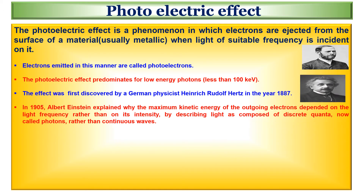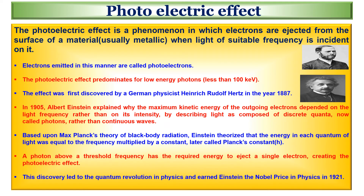In 1905, Albert Einstein explained why the maximum kinetic energy of the outgoing electrons depended on the light frequency rather than on its intensity, by describing light as composed of discrete quanta, now called photons, rather than continuous waves. Based upon Max Planck's theory of black body radiation, Einstein theorized that the energy in each quantum of light was equal to the frequency multiplied by a constant, later called Planck's constant H. A photon above a threshold frequency has the required energy to eject a single electron, creating the photoelectric effect. This discovery led to the quantum revolution in physics and earned Einstein the Nobel Prize in Physics in 1921.